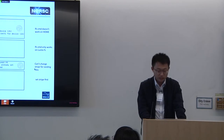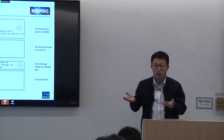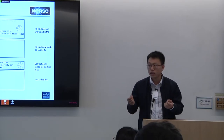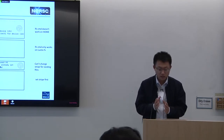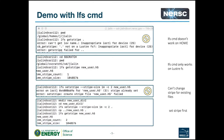In order to change the striping — since having more OSTs can improve concurrency and IO performance by having concurrent servers serve your requests — you have to create a new directory and manually move your existing files into that newly created directory. You cannot directly change the stripe configuration (OST count and stripe size) on an existing file.